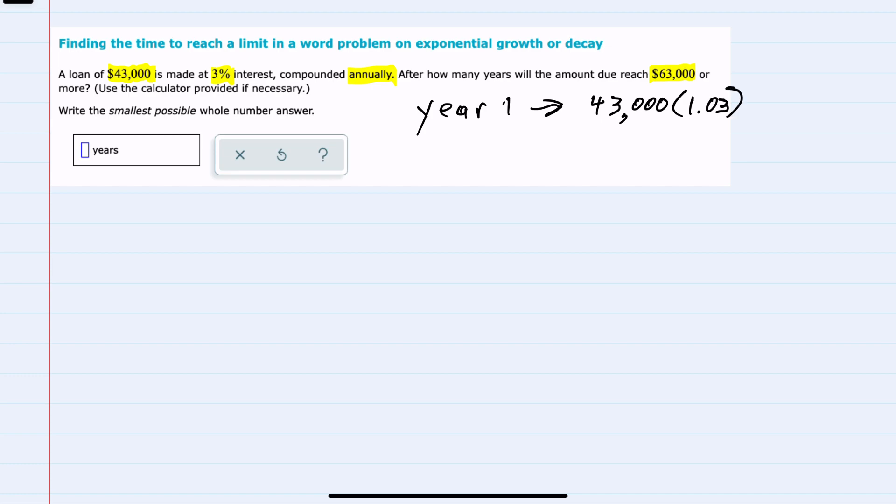And then at the end of year two, we would be starting with that previous $43,000 times the 1.03 from the previous year and then multiplying by another 1.03 for the second year.